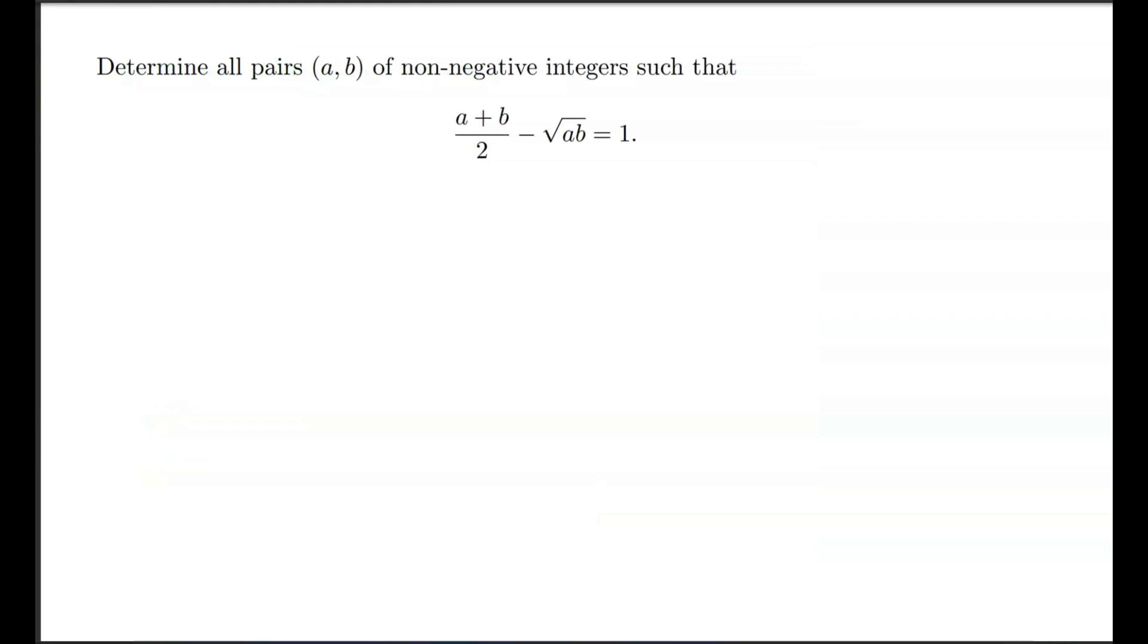Determine all pairs (a,b) of non-negative integers such that (a+b)/2 - √(ab) = 1.